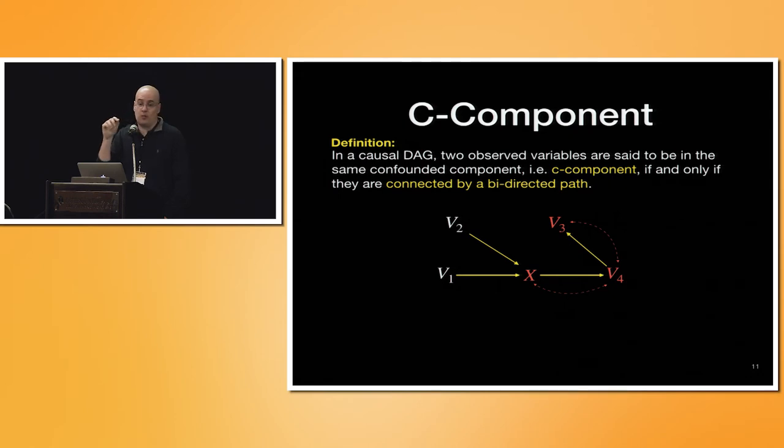Two nodes are in the same C component if they are connected to these bi-directed paths, paths to these dashed arrows. For example, here, X and C means confounded. Then it means that X before is in the same component, V4 and V3 is in the same component, and X and V3 is in the same C component, which is somewhat related to they are entangled in some way that there is confounding, messing up how these guys are moving.